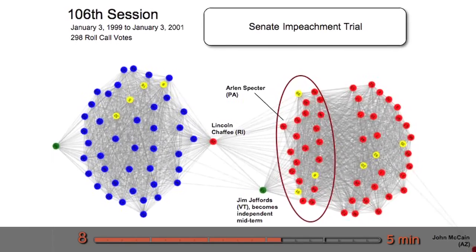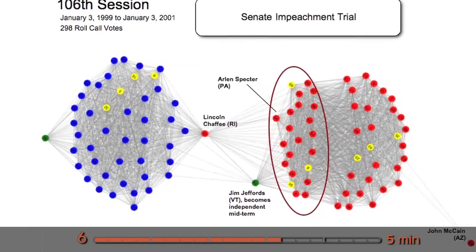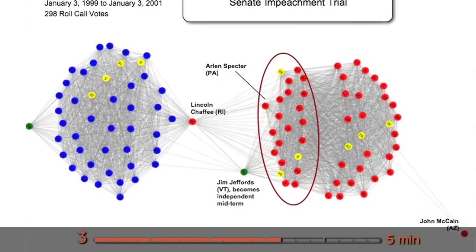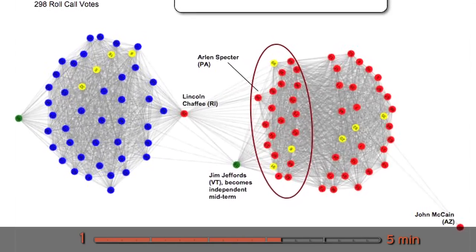This is the Senate impeachment trial. So this is when Rehnquist actually came in and presided over the Senate during this session. You can see it was the Republicans who split this time - very interesting, one of the few times that happens over the course of the 10 years.